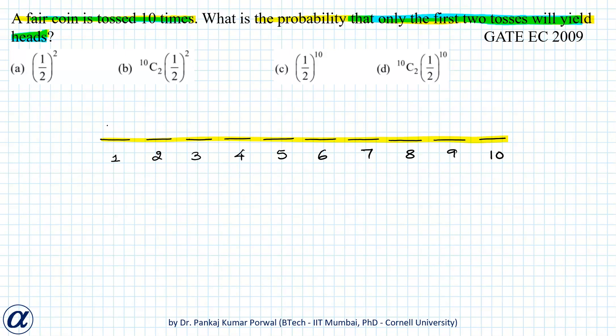So in fact our event is first outcome is head and second outcome is head and the third outcome is tail and so on. Here note that all these tosses are related with AND condition, so the probability of all of them can be written as probability of intersection of all these events.